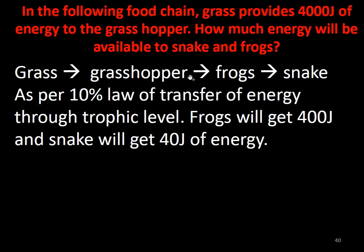In the following food chain — grass provides 4000 joules of energy to the grasshopper — how much energy will be available to the frog and the snake? As per the 10% law of energy transfer between trophic levels, frogs will get 10% of 4000, which is 400 joules, and snakes will get 10% of 400, which is 40 joules.